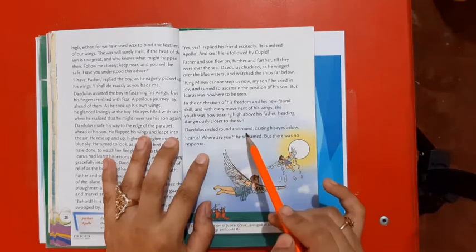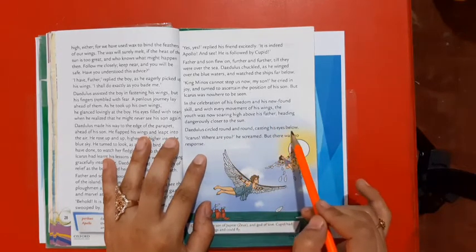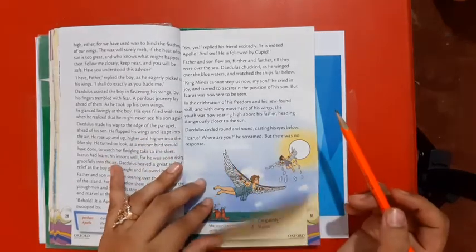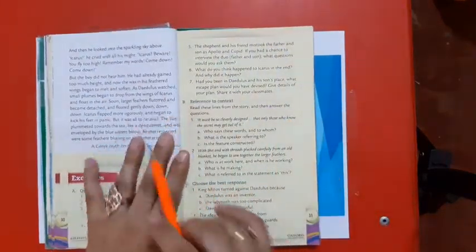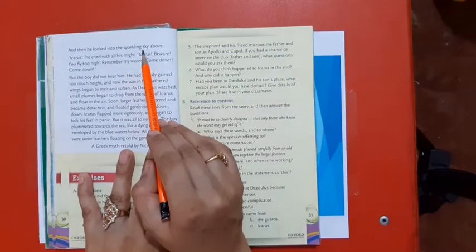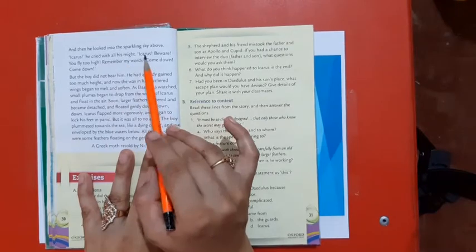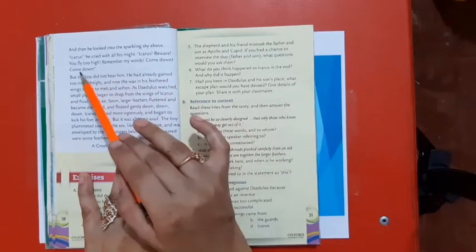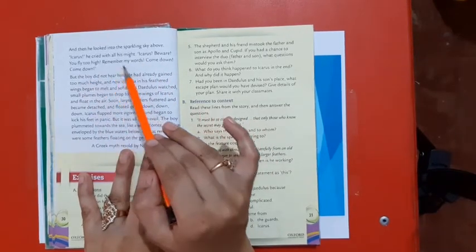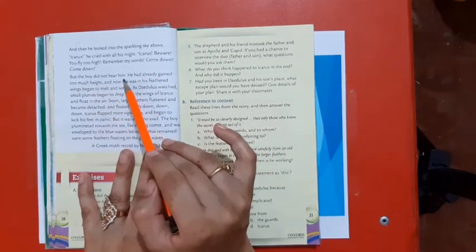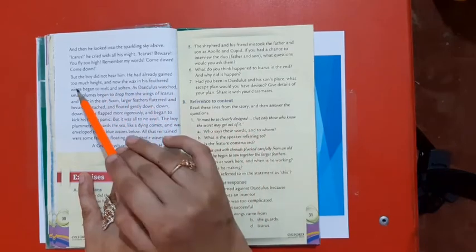Daedalus circled round and round, casting his eyes below. Icarus, where are you, he screamed, but there was no response. And then he looked into the sparkling sky above. Icarus, he cried with all his might, Icarus beware, you fly too high. Remember my words, come down, come down. But the boy did not hear him. He had already gained too much height.